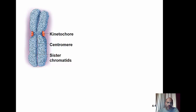Then we looked more closely at the structure of the chromosome as it's coiled up during mitosis. Each one of these is sister chromatids — basically exact copies of DNA produced during the S phase of the cell cycle. This constricted area where the two DNA strands are still connected is called the centromere, and the protein plaques on the side are the kinetochore, which is where the spindle fiber connects.